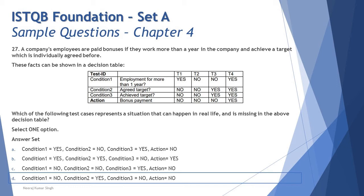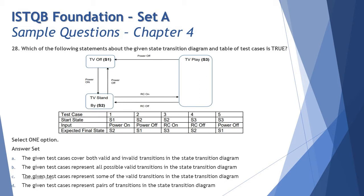The right answer for Question 27 is D. Now let's look at Question 28: which of the following statements about the given state transition diagram and table of test cases is true? This relies on your understanding of state transition testing. The diagram shows a TV with three states: TV Off (state 1), TV Standby (state 2), and TV Play (state 3).